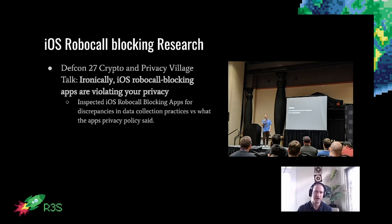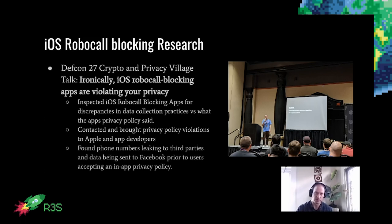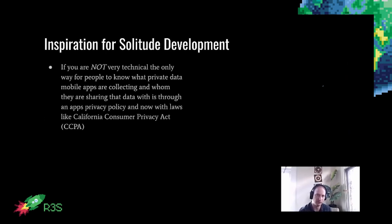I brought these findings to Apple and said these app developers are not following what their privacy policy says according to your guidelines, and brought this to the app developers. I found a few apps that sent your phone number to third parties, as well as data being sent to Facebook and third parties prior to accepting an in-app privacy policy. After doing this research, I was thinking: if you're not very technical, you can't really have any transparency into what happens with your private data when you use a mobile app or web application.